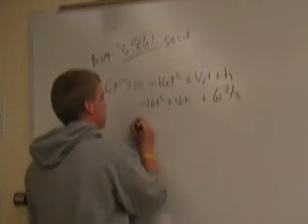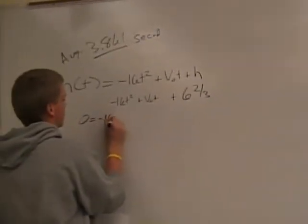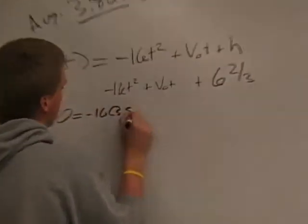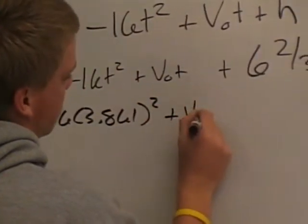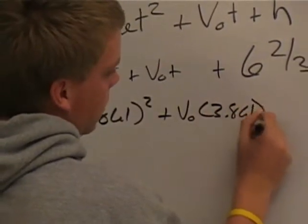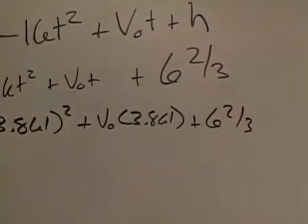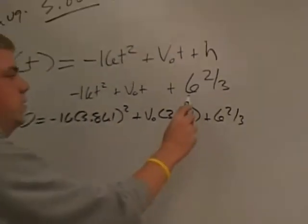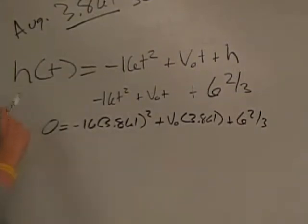We can plug that into the equation and set it equal to zero. So -16 times 3.861² plus initial velocity times 3.861 plus 6 and 2/3 feet. And this has to be in feet because the equation we have is for height in feet.